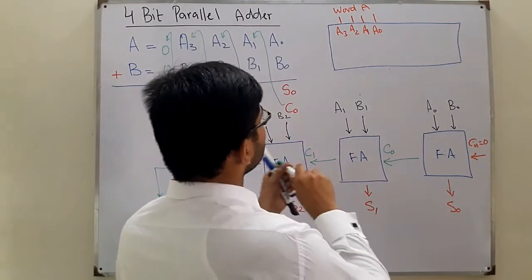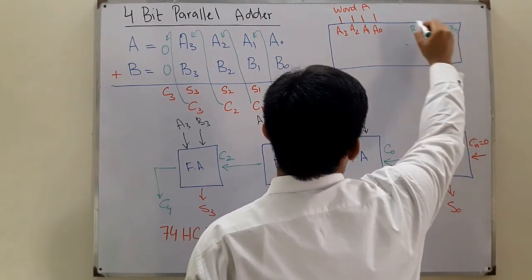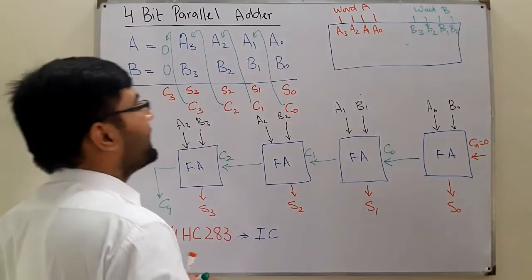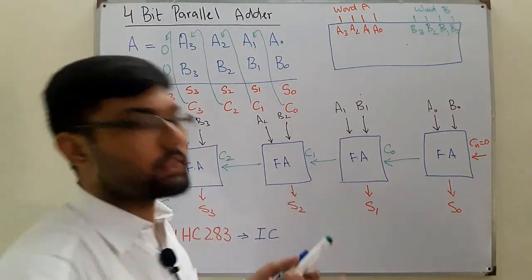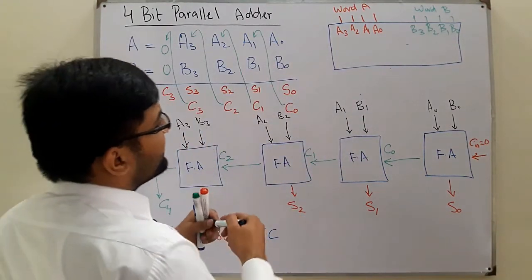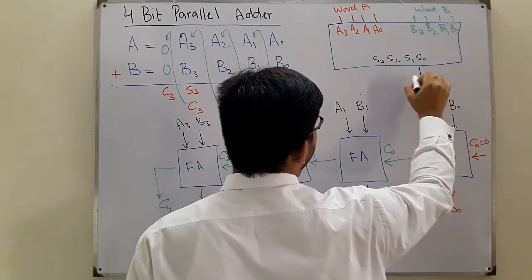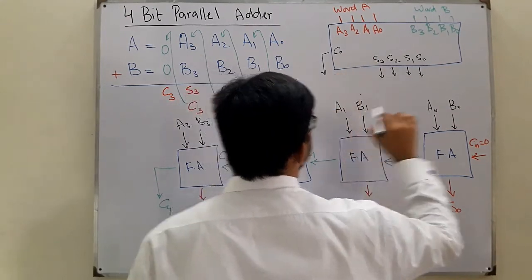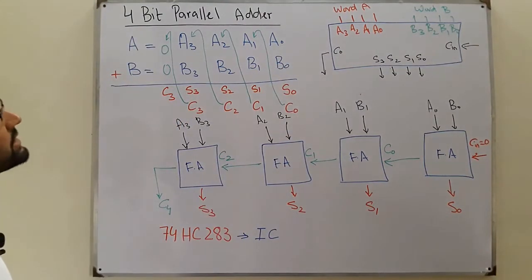And word B with bits b3, b2, b1, b0 — another 4-bit input, called word B. This is a nibble. The outputs are s3, s2, s1, and s0, along with a carry output. There is also a carry input. This is another representation of the 4-bit parallel adder.